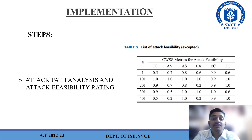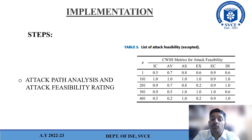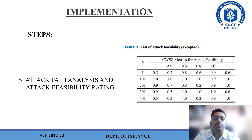Step 3 is attack path analysis and attack feasibility rating. Here, the ranks of the CWSS metrics are added to each threat scenario. It is also possible to think more concretely about the interpretations of the attack path and clearly distinguish the attack feasibility for each route.